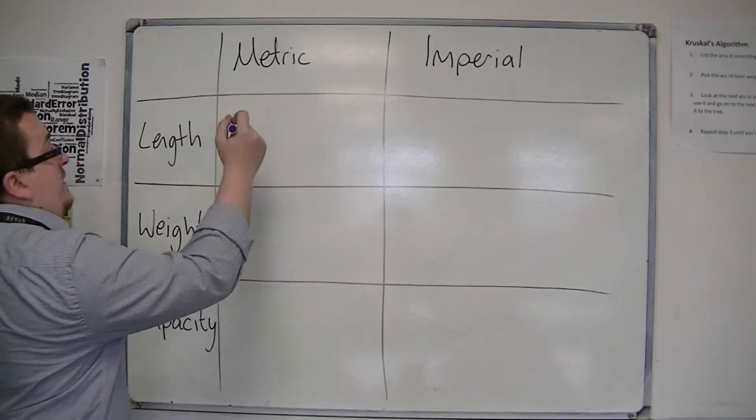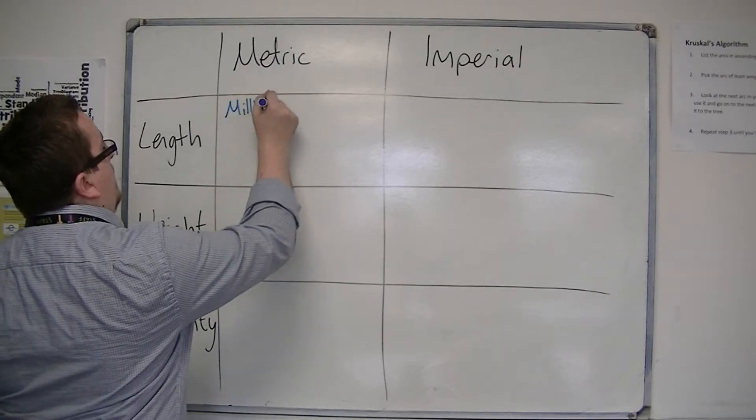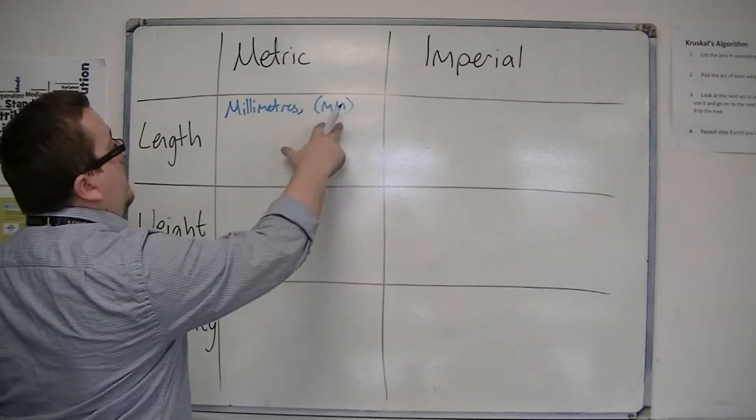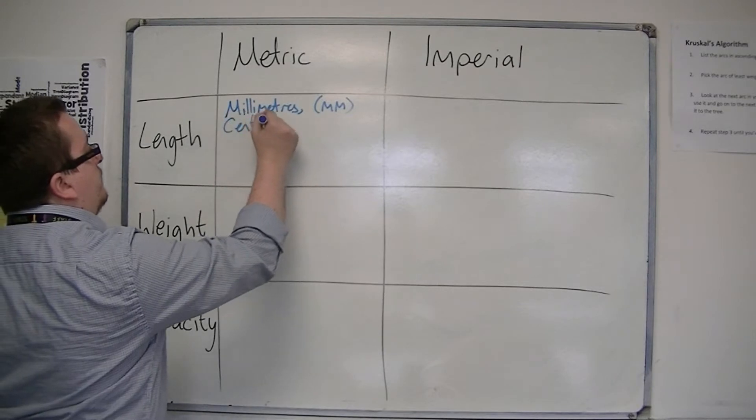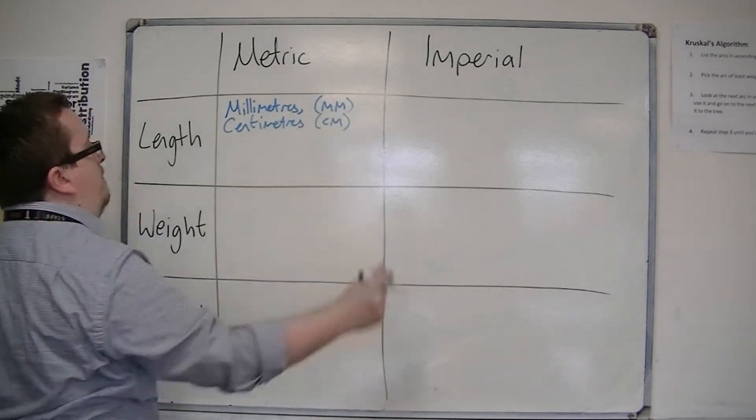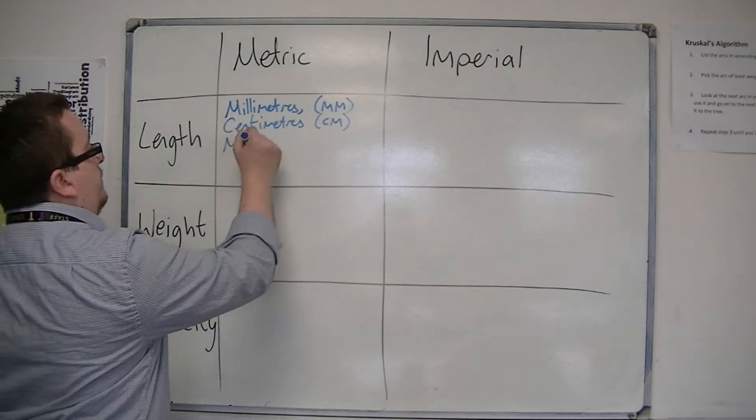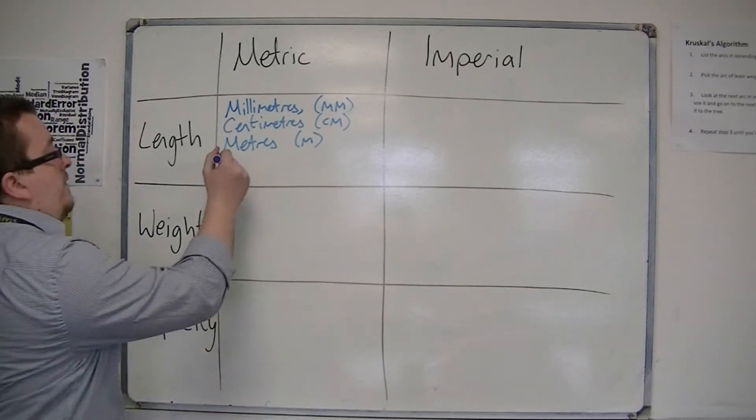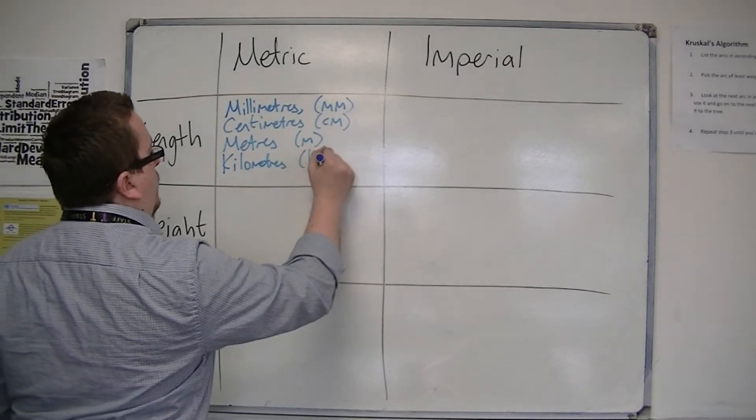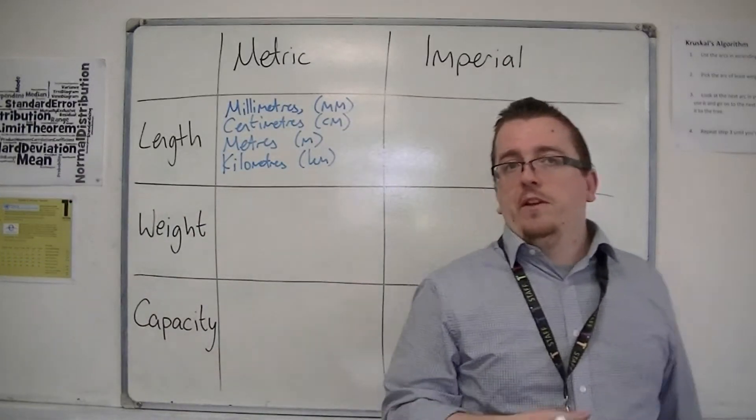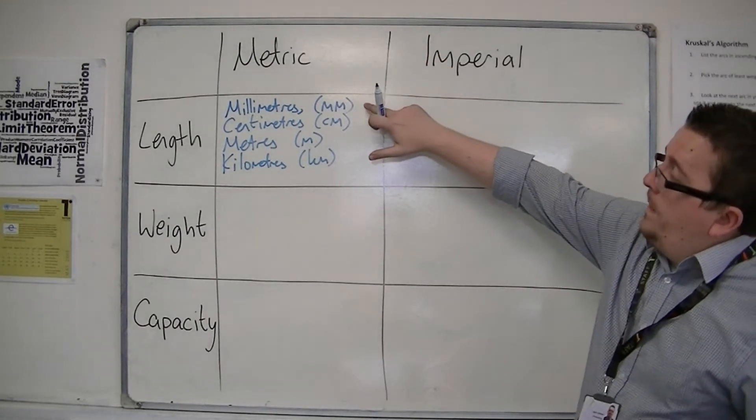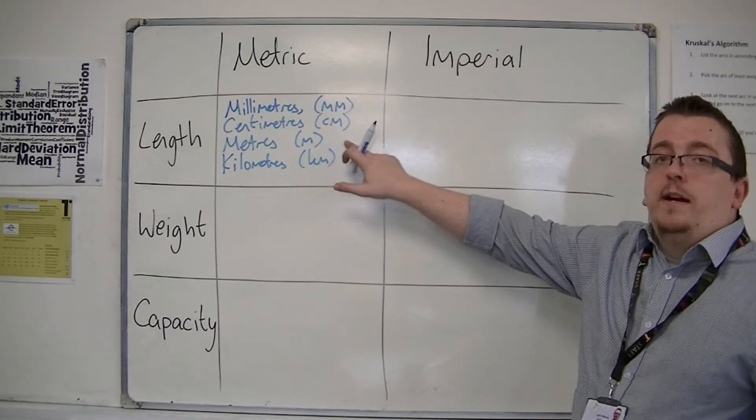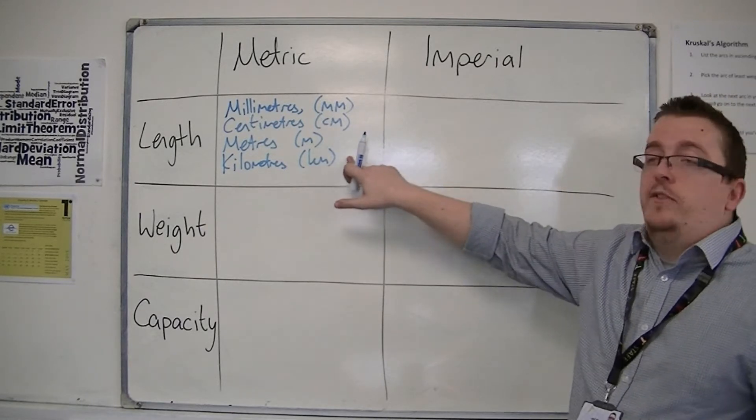we should be used to millimetres, for example, so mm as a unit. Then of course you have centimetres, so cm. Then you have metres, written as m. And then you have kilometres. There are 10 millimetres in a centimetre, and there are 100 centimetres in a metre, and there are 1,000 metres in a kilometre.